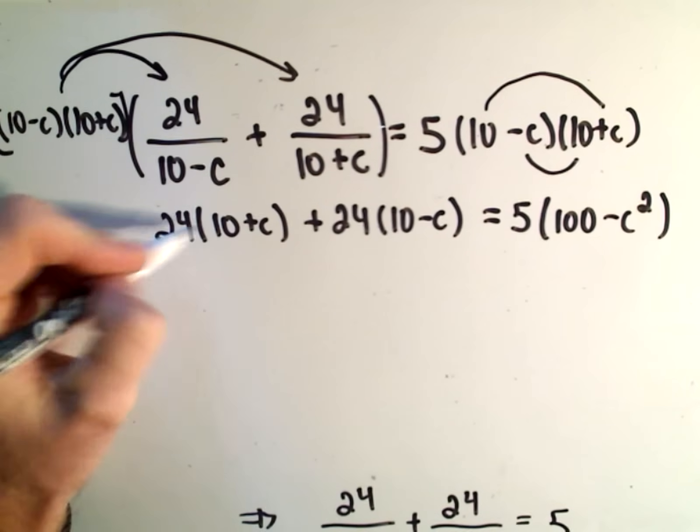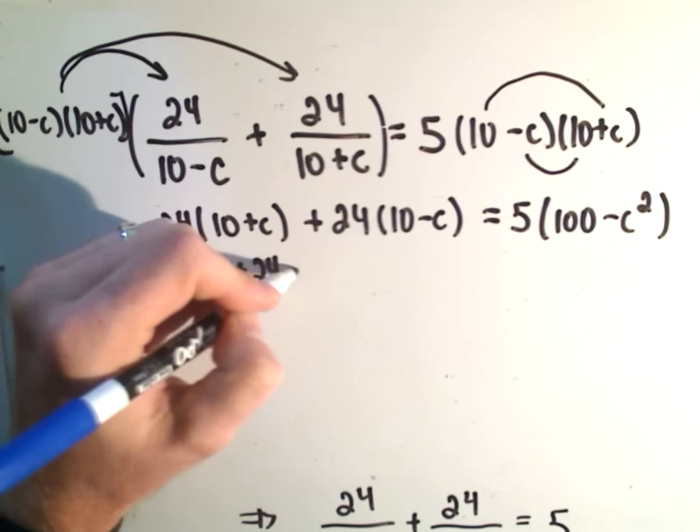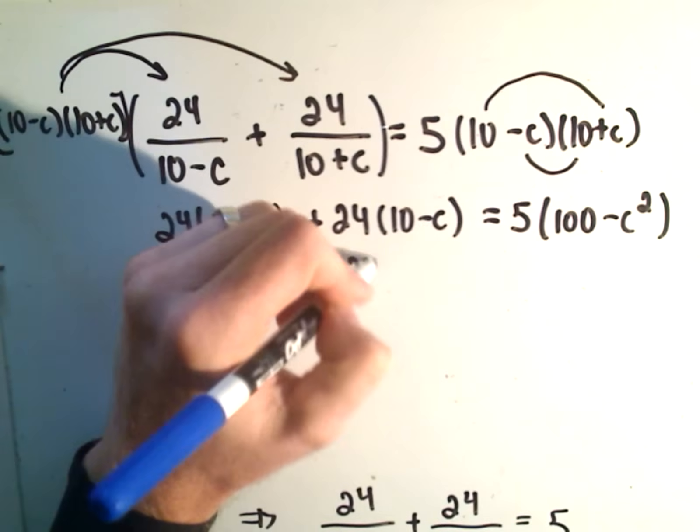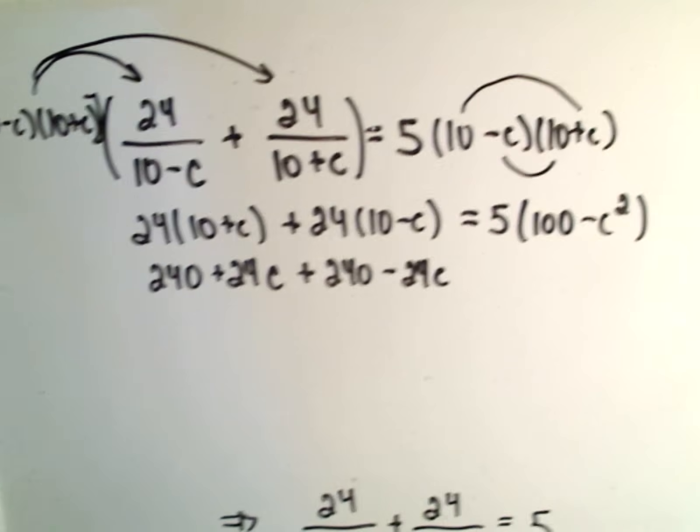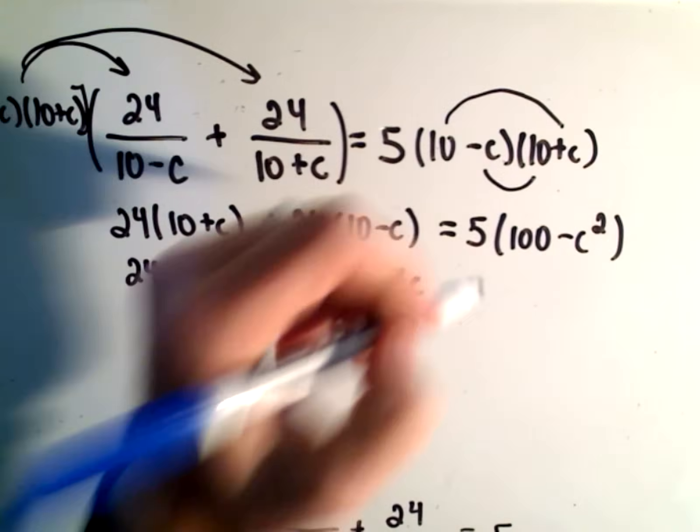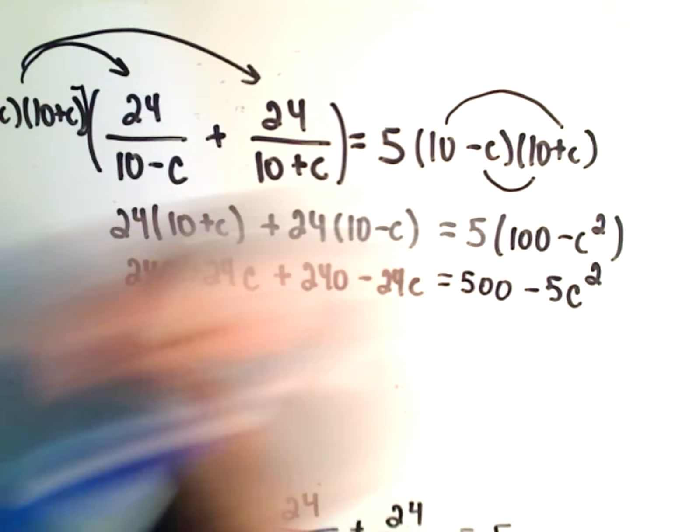Okay, so on the left side, 24 times 10 is 240 plus 24C. And then I'll get 240 minus 24C on the left side of my equal sign. On the right side, we'll get 500 minus 5C squared.